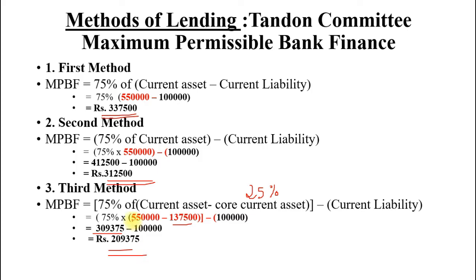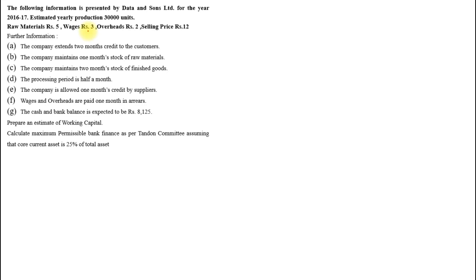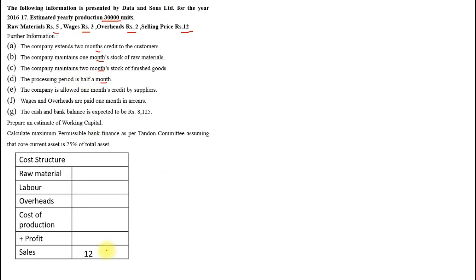Now let us take the second sum. The following information is presented by Data and Son Limited for the year ending 31st March 2016-17. Estimated yearly production is 30,000 units. Material is 5 rupees, wages 3 rupees, overheads 2 rupees, selling price 12 rupees. All adjustments are based on months. Cost structure: selling price 12; RM 5 + wages 3 + OH 2 = cost of production 10; profit = 12 − 10 = 2 rupees.